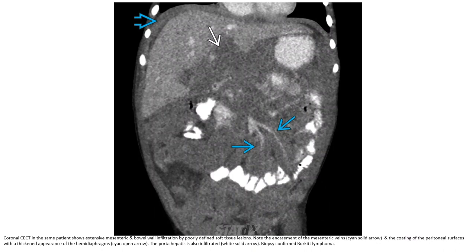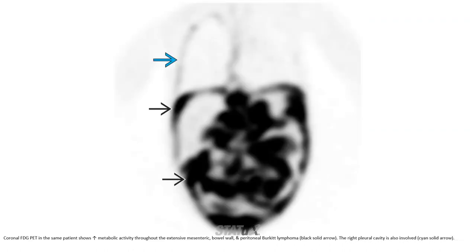Coronal contrast-enhanced CT in the same patient shows extensive mesentery and bowel wall infiltration by a homogeneously enhancing soft tissue lesion. Note the encasement of the mesentery and coating of the peritoneal surface. The porta hepatis is also infiltrated — biopsy-confirmed Burkitt lymphoma. FDG-PET in the same patient shows increased metabolic activity throughout the extensive mesentery, bowel, and peritoneal Burkitt lymphoma. The right pleural cavity is also involved.